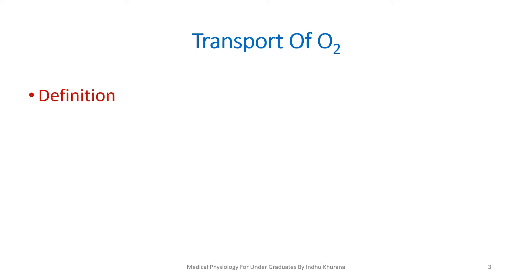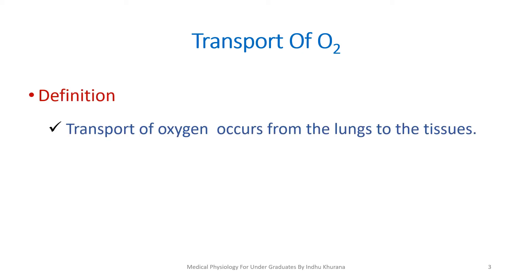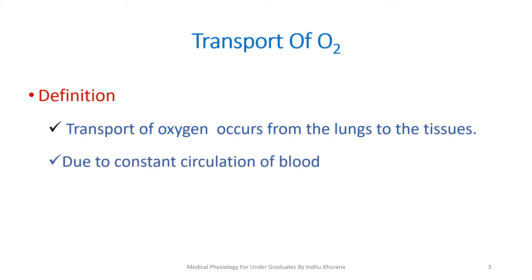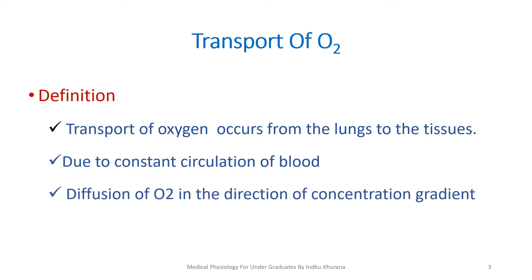The transport of oxygen occurs from the lungs to the tissues due to constant circulation of the blood. This occurs by diffusion of oxygen in the direction of the concentration gradient. You can write two or three sentences at this point as your introduction.